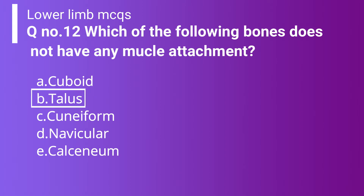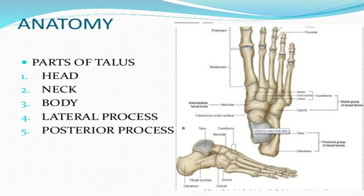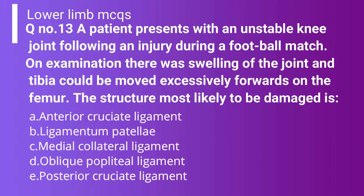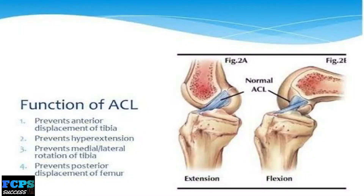Question number 13: A patient presents with an unstable knee joint following an injury during a football match. On examination there was swelling of the joint and the tibia could be moved excessively forward on the femur. The structure most likely damaged is option A: anterior cruciate ligament. Option B: ligamentum patellae. Option C: medial collateral ligament. Option D: oblique popliteal ligament. Option E: posterior cruciate ligament. The correct answer is option A, anterior cruciate ligament, because it protects the femur from overextending on the tibia. Excessive anterior movement is protected by the anterior cruciate ligament.